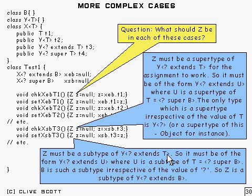So what's the biggest subtype we can get? It's got to be in the form Y<?> extends U, where U is a subtype of that T. So what's the biggest subtype of T we could get? T is something that is super B. Well, the biggest subtype we could get is going to be B.